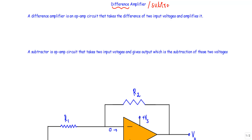So what is a difference amplifier? A difference amplifier is an operational amplifier circuit that takes the difference of two input voltages and amplifies it. Our operational amplifier will take the difference of the two input voltages and amplify that differential voltage.